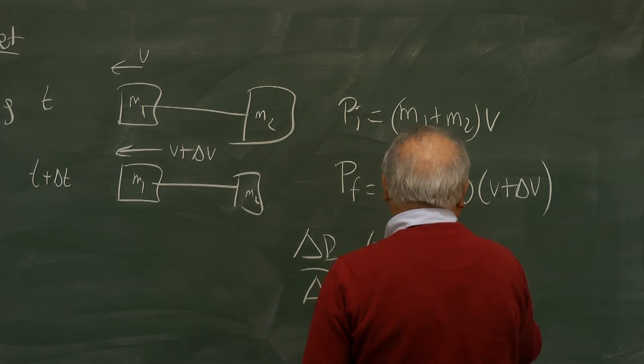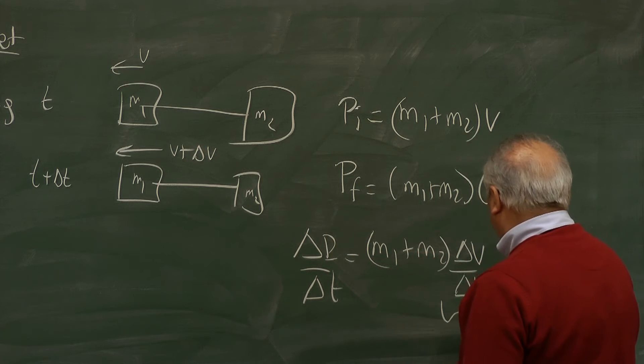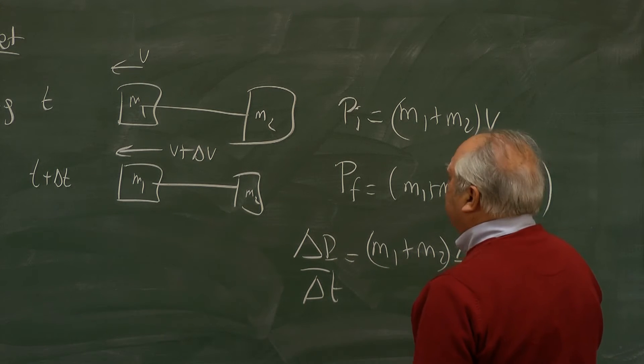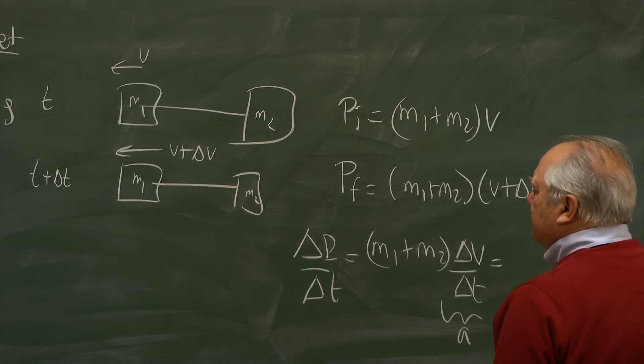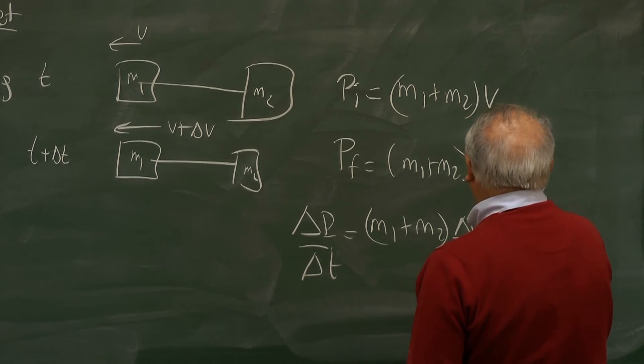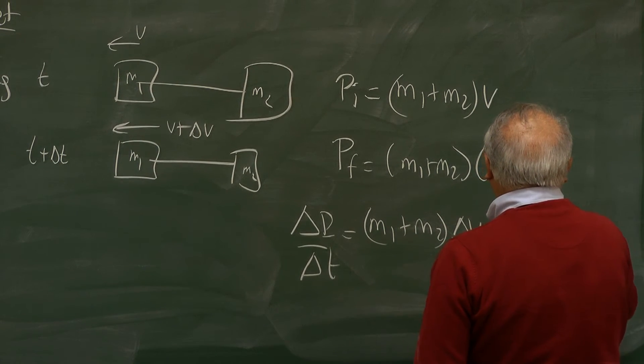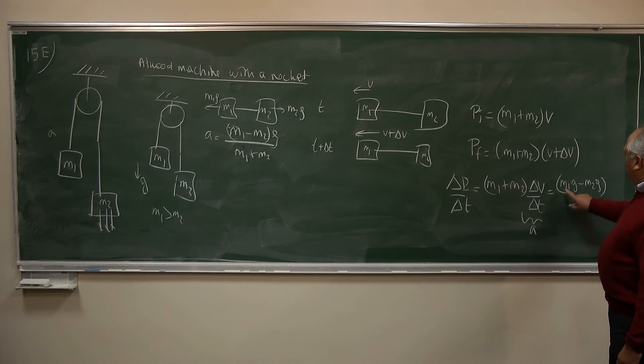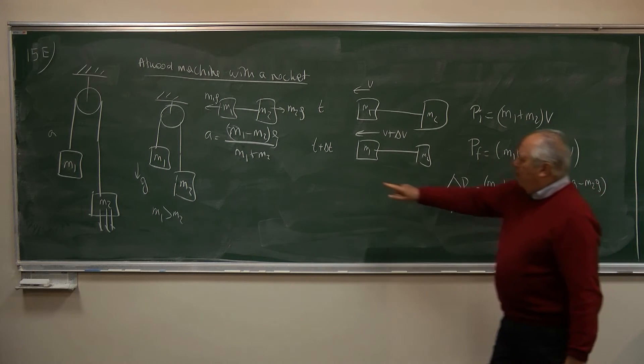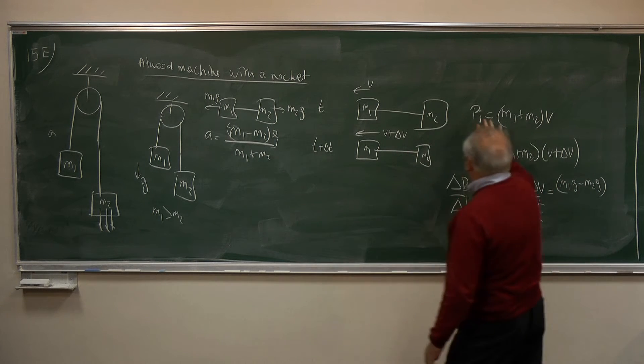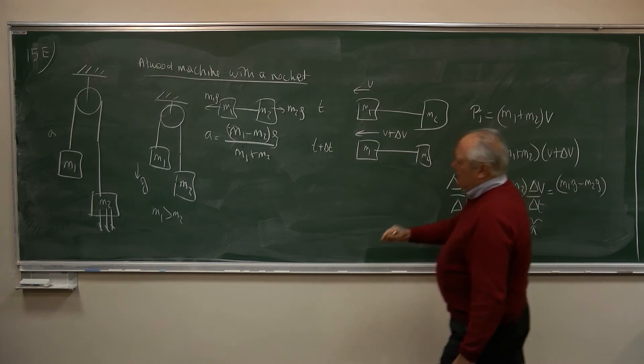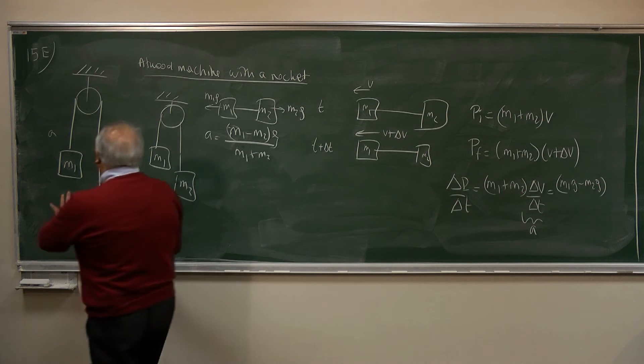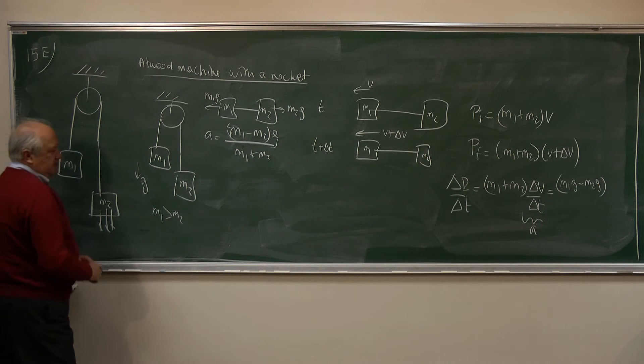This is the force. This is the acceleration. And this is the net force applied on the system. And that's obviously M1 G minus M2 G. So A is again M1 G minus M2 G divided by M1 plus M2. So we will follow this method in solving this variable mass problem.